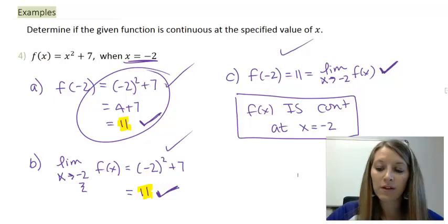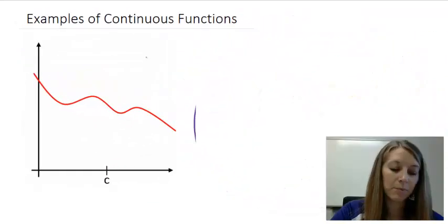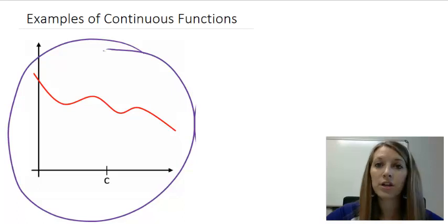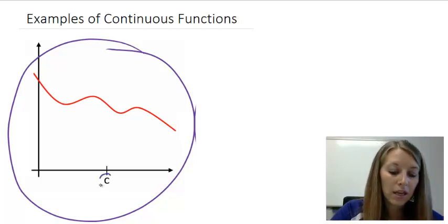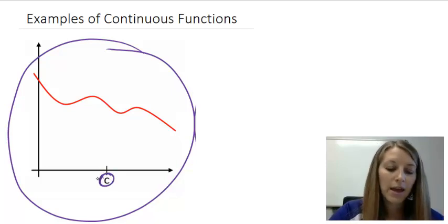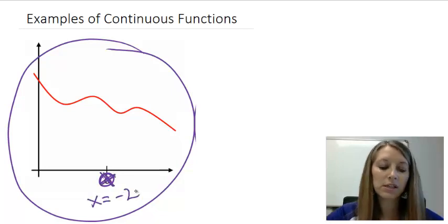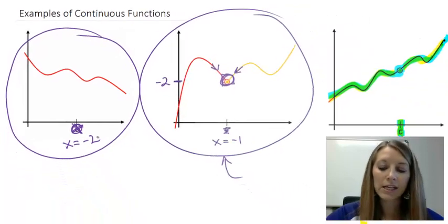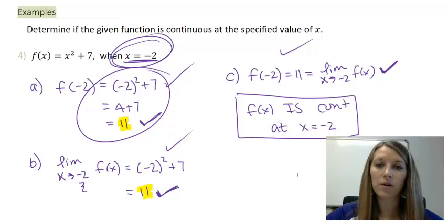If you want to see the visual for this example — it's basically just your typical function, nothing weird going on. We see the function is continuous all the way through for any c value, and specifically in our problem the c value was negative two. So this function is continuous everywhere, especially at whatever x value we're looking for.